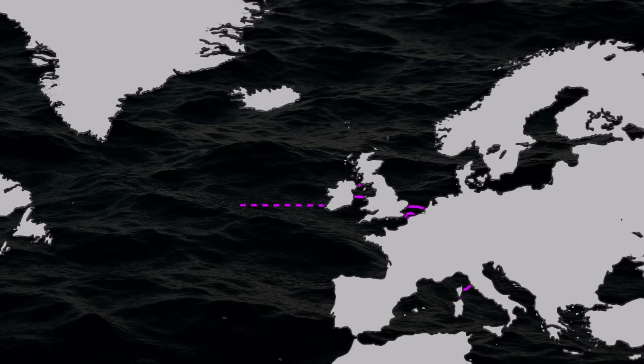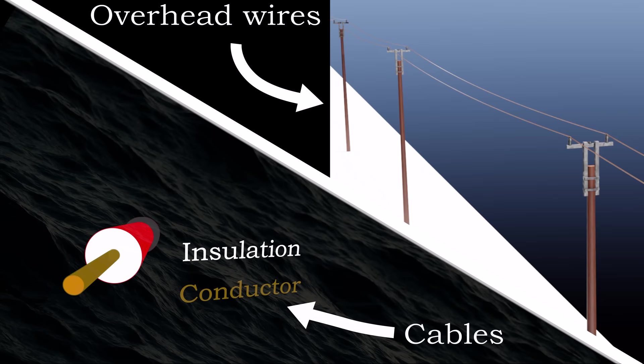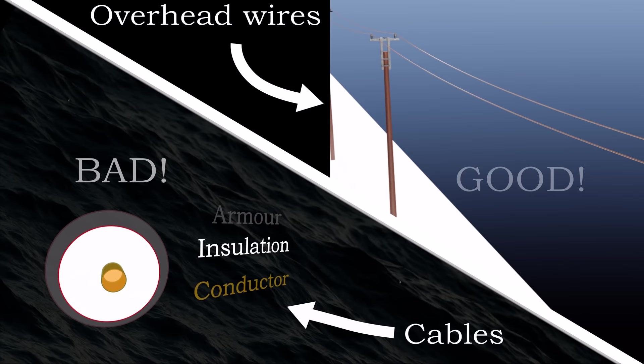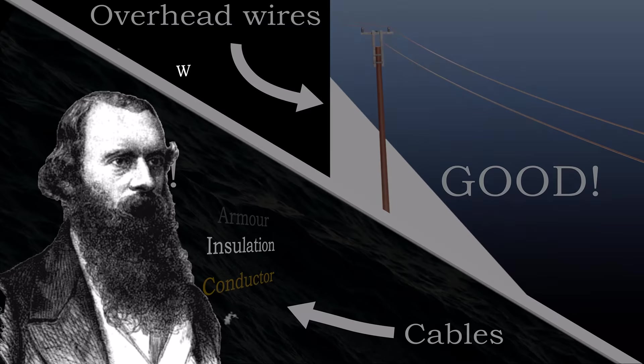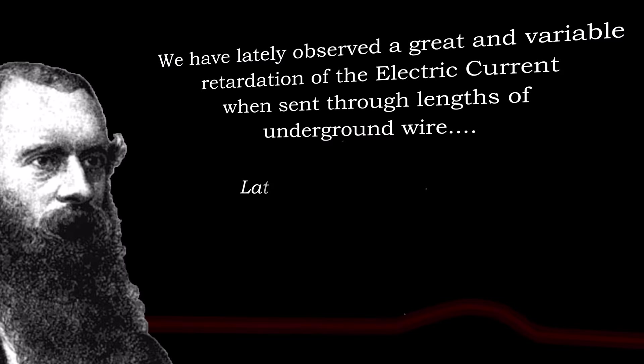But the propagation of signals through cables was very different to overhead wires. The brutal truth was that sending pulses down cables over long distances led to smearing and distortion, rendering fast communication unfeasible. This was not observed in overhead wires. At the time, nobody understood why this was the case.